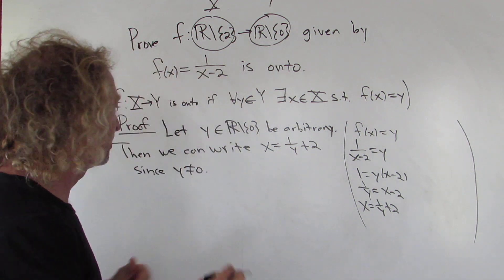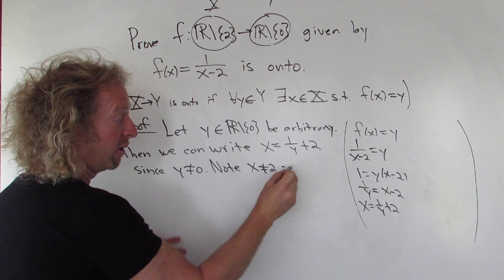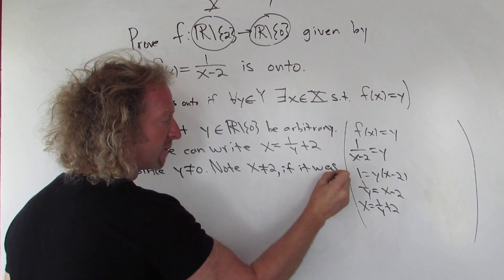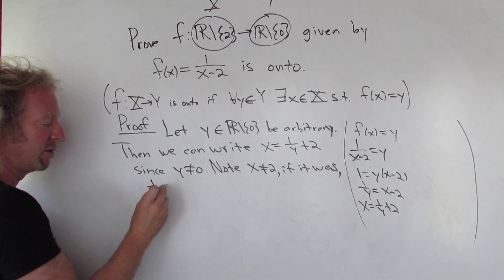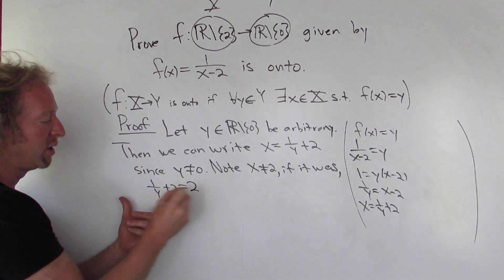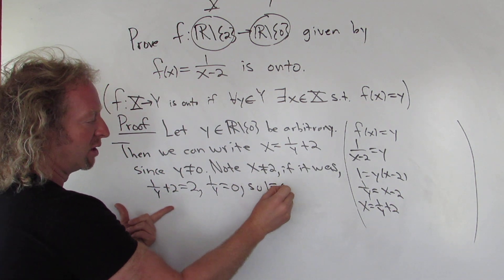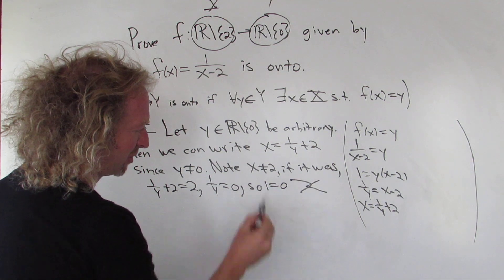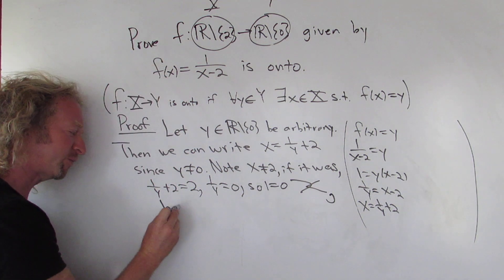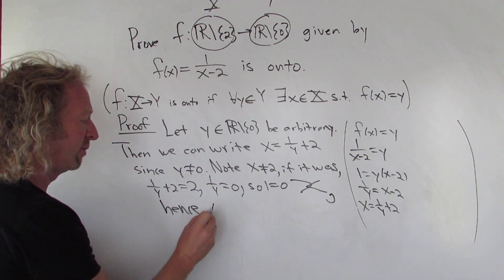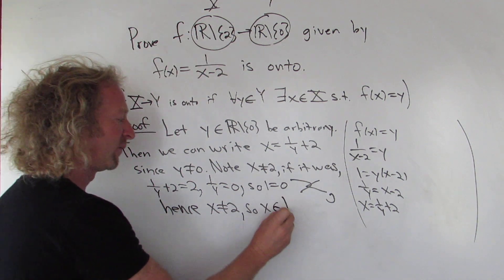Now we have to explain why x is in capital X — that is, why x is not equal to 2. We use a proof by contradiction: if x were equal to 2, we'd have 1 over y plus 2 equals 2, subtract 2 to get 1 over y equals 0, multiply by y to get 1 equals 0 — a contradiction. Hence x is not equal to 2, so little x is indeed in this set.